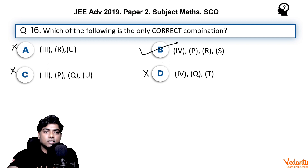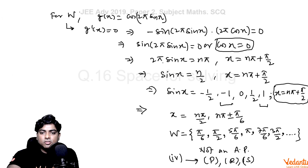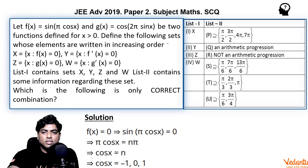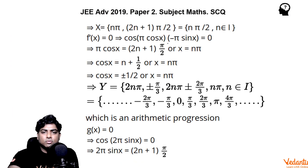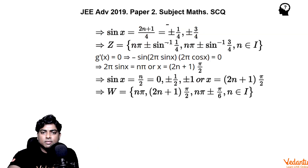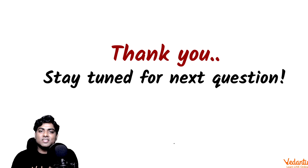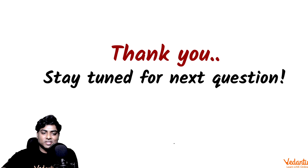To summarize: the third entry Z matches only with R, and the fourth entry W matches with P, R, and S. For question 16, option B — entry 4 with P, R, S — is the correct answer. The complete solution is shown on screen. I hope you understood the entire matrix match solution. Thank you and stay tuned for the next question.